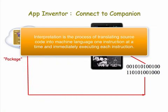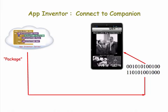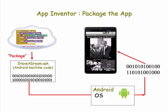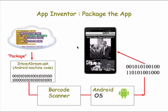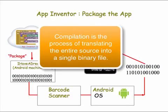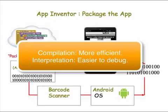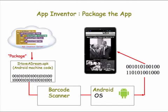When you package an app, some kind of translation has to occur as well, but it's quite different. In this case, a piece of software on the MIT server translates your entire program into binary code and puts it into a file called an APK file. The APK file can then be loaded onto the phone using a barcode scanner or other software. This form of translation is known as compilation, where the entire source code program is translated into a single binary file. The advantage of compilation is that the translation has to happen only once, so it's more efficient. However, the advantage of interpretation is that it allows us to more easily see how each instruction works and to debug our apps as we're developing them.